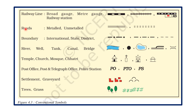There are different types of roads shown by using different symbols. If continuous two parallel lines are drawn on a map, it shows a metal road — a pakka road. While two parallel broken lines show an unmetalled road, or kacha road.